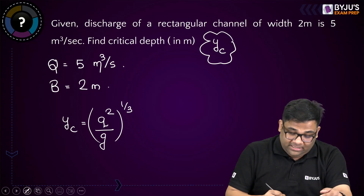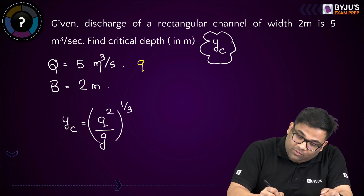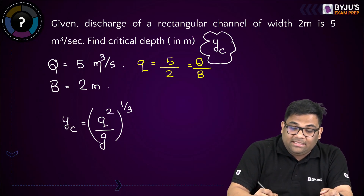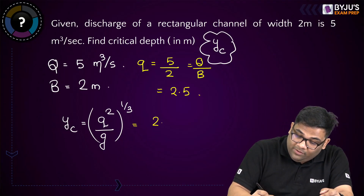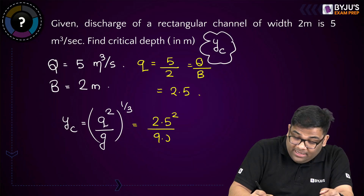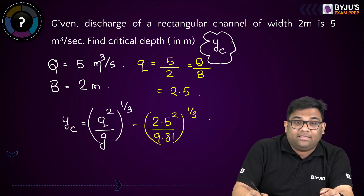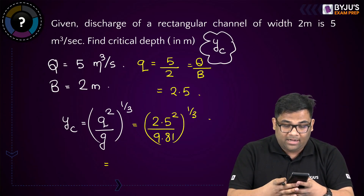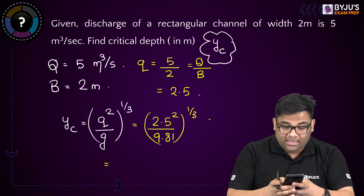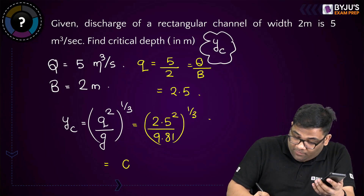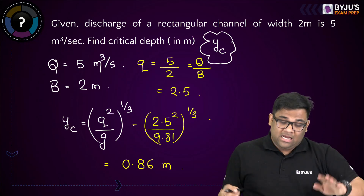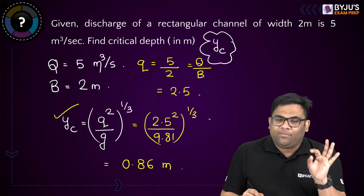To use this expression I need small q. Small q equals 5 divided by 2 equals 2.5. This becomes (2.5 squared by 9.81) to the 1/3. 2.5 squared is 6.25. Dividing 6.25 by 9.81 and then taking the cube root gives approximately 0.86 meters.